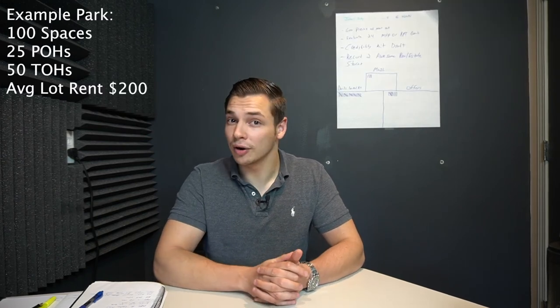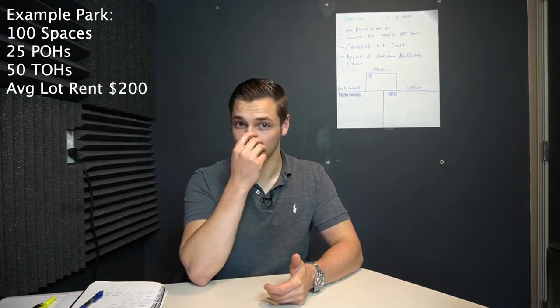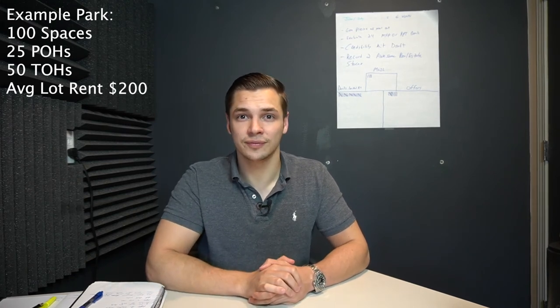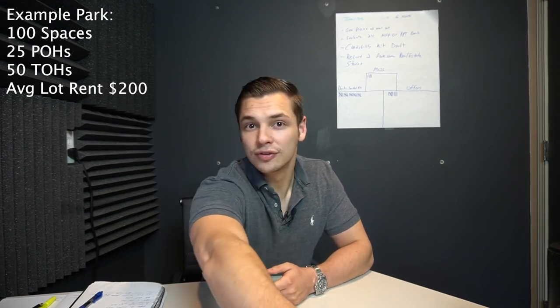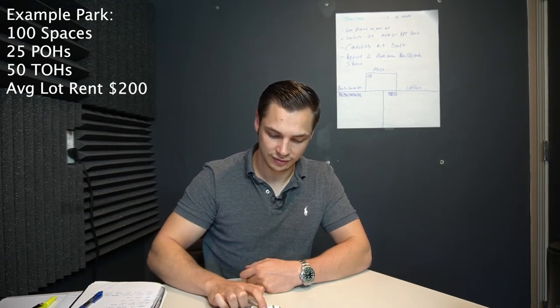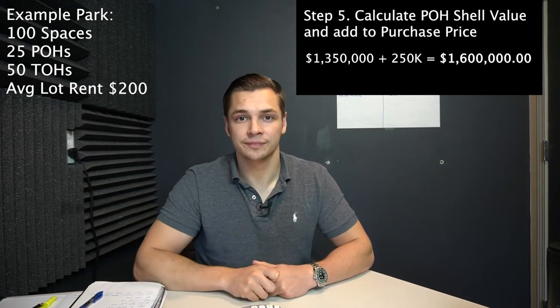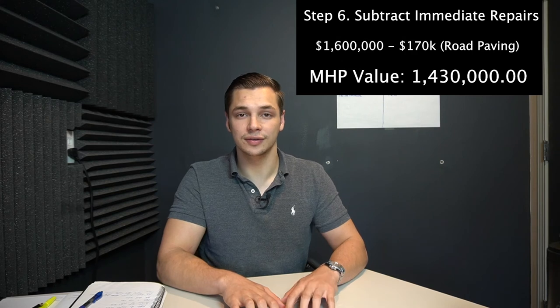The next thing we need to look at is whether there are any park owned homes. If there are park owned homes, we need to figure out the value of those. Let's say out of our 75 units, we have 25 park owned homes. What's the average shell value of those homes? Let's say it's $10,000. So we have $10,000 times 25 park owned homes — we're going to add $250,000 on top of our purchase price.